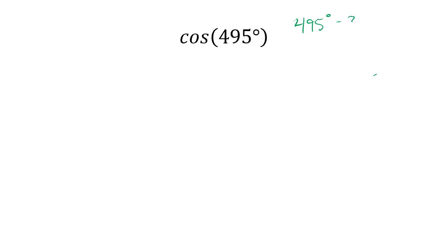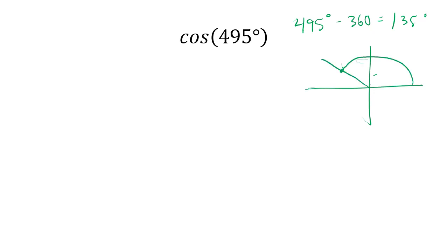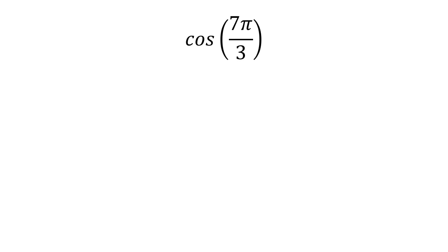Cosine of 495 degrees. I subtract 360, which gives me 135 degrees. Cosine of 135 degrees — we have coordinates (-√2/2, √2/2). Cosine is negative here, so the answer is -√2/2.